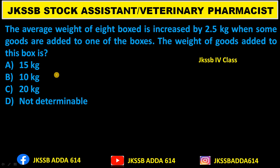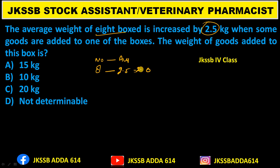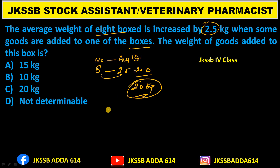This question was asked in the Fourth Class exam: the average weight of 8 boxes is increased by 2.5 kg when goods are added to one box. Find the weight of goods added to the box. The answer is 20 kg, option number C. See how simple a question was given in the Fourth Class!